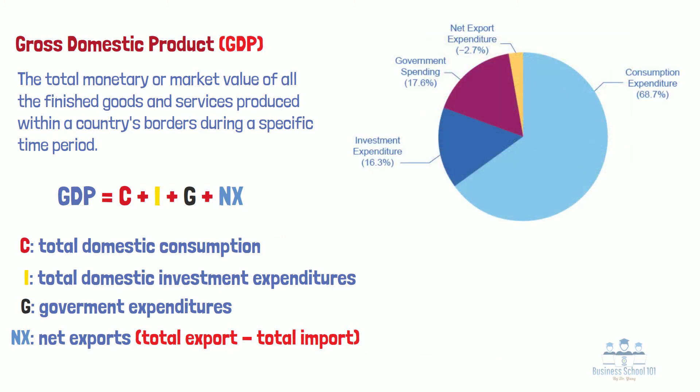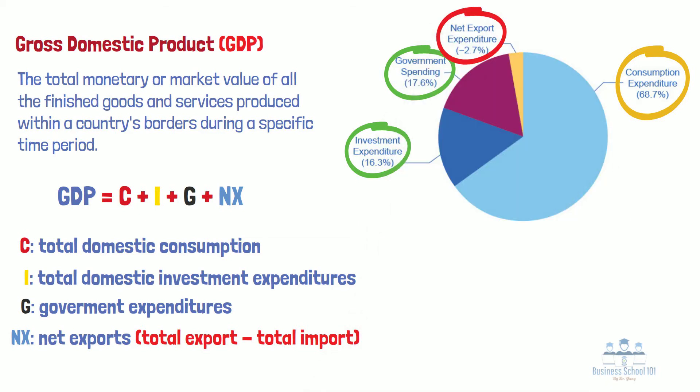Here is the pie chart of the typical distribution of America's GDP. As you can see, consumer spending contributes almost 70 percent of the total GDP. Business investments and government expenditures normally contribute 15 to 20 percent. Additionally, it is important to note that the U.S. normally has a trade deficit. This means that the cost of a country's imports exceeds the value of its exports, so net exports for America are usually between negative 3 to negative 5 percent.